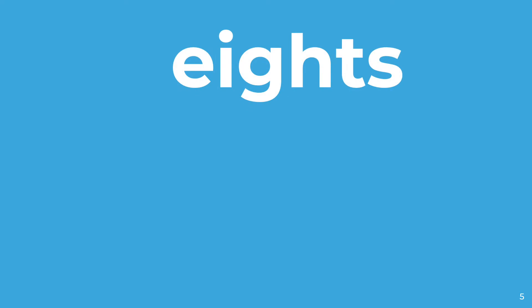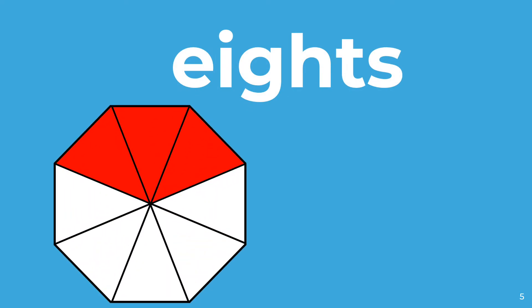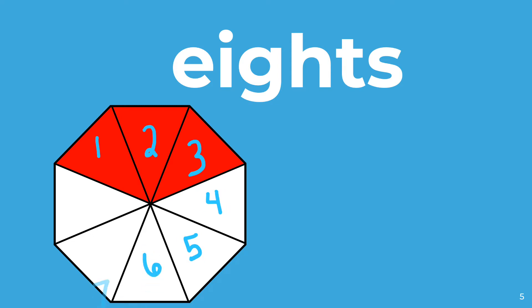Eighths is a word for when an object is partitioned into eight parts. This shape has one, two, three, four, five, six, seven, eight parts, so it is partitioned into eighths.